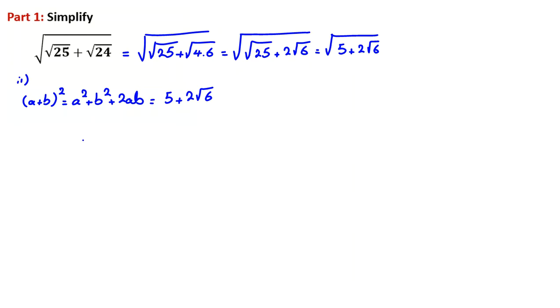If we want to find ab where a² + b² = 5 and 2ab = 2√6, we can conclude ab = √6, which equals √2 × √3.